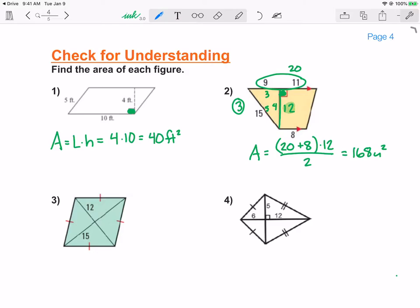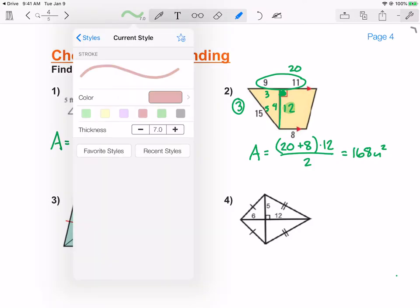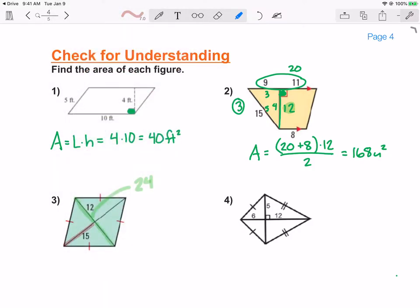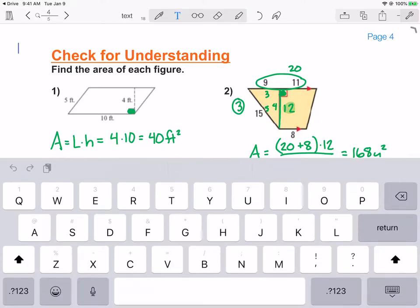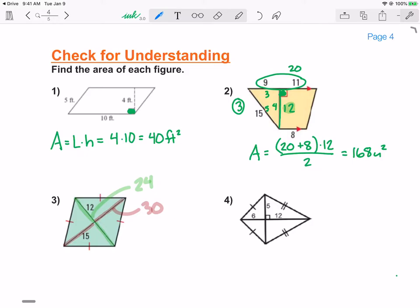Next problem is just a classic diagonal. It's kind of hard to tell what it's telling me in terms of the diagonal lengths. So let's pretend that just this length here is 12, which means this length here is also 12. So the entire diagonal will be 24. And let's pretend that just this length here is 15, which means this other length is 15. So the entire length will be 30. So then multiplying my diagonals together, 24 times 30, and dividing that result by 2, gives me an area of 360 units squared.